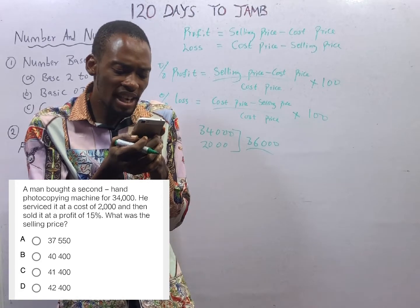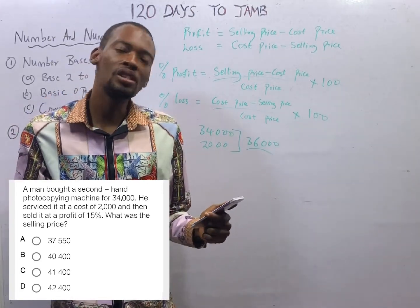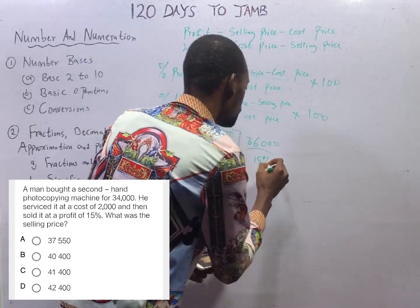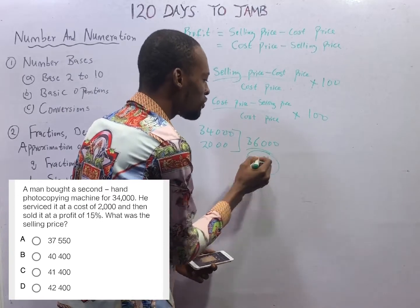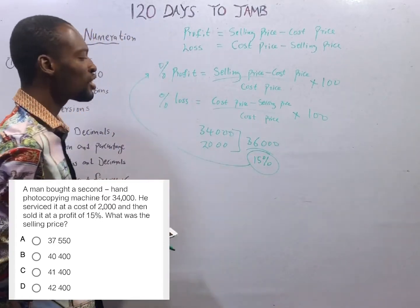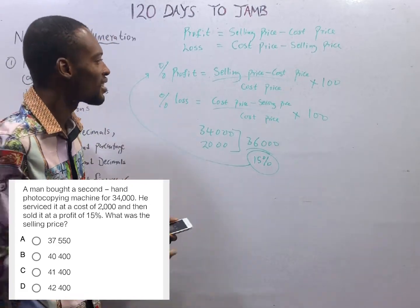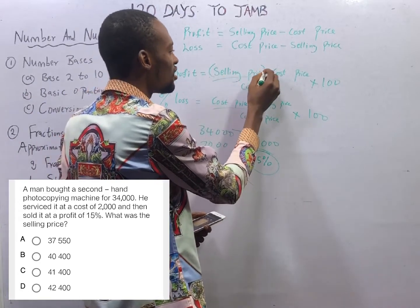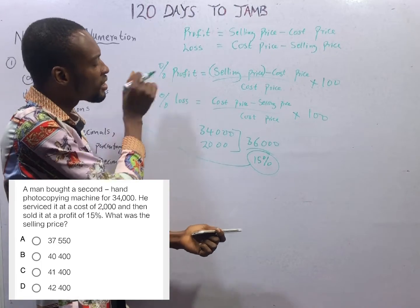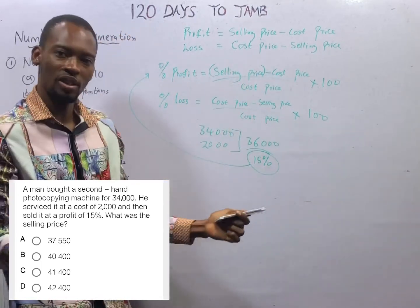We are told that he sold it at a profit of 15%. We are not told how much he sold it, but we are aware that he made a 15% profit. That is the percentage profit — percentage profit is 15. The selling price is the question. From this formula, we have our percentage profit and we have our cost price, so we can look for selling price.